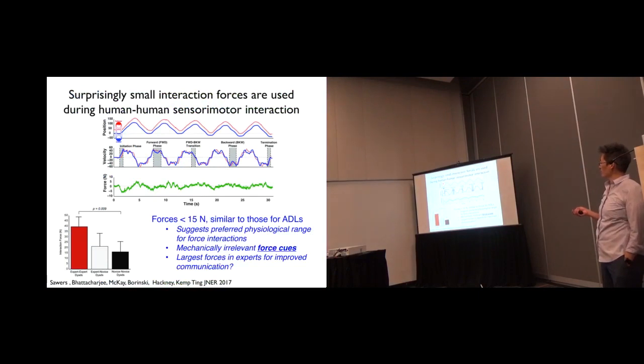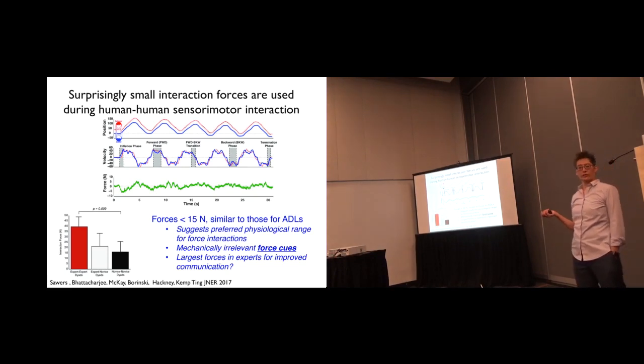So we were surprised at how small the interaction forces were. And what I'm showing you, they're walking back and forth in a very predictable pattern. And you can see the forces here. This is five newtons up and down. And this is partly because they're learning that they have to go forward and backwards.